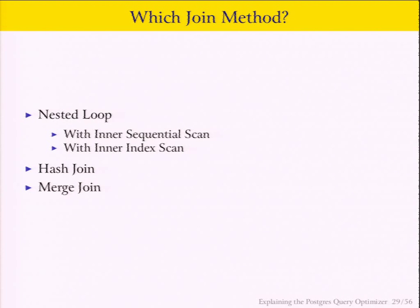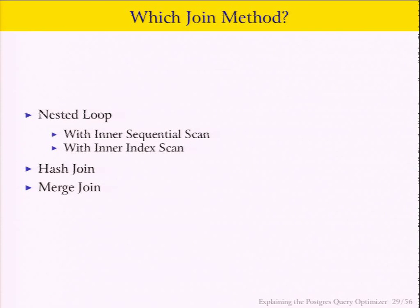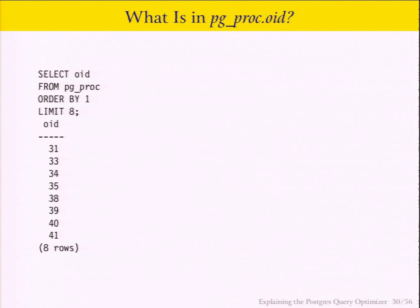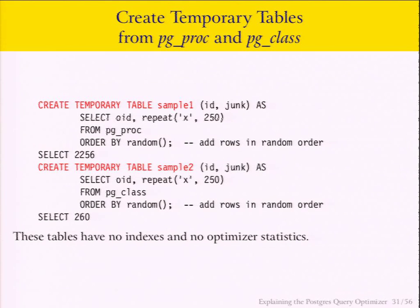Having understood scan methods, let's look at join methods. A join method is how we take two tables and join them together. There are actually four ways: nested loop — two types — hash join, and merge join. To demonstrate, I need to create two temporary tables. I'll use the pg_proc table for some of my data, creating a table called sample_one and a table called sample_two, with no indexes and no optimizer statistics to start.